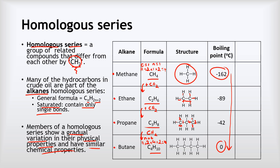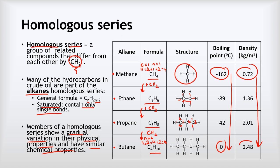There's this gradual increase in boiling point as the molecules get bigger. Similarly with their density — you don't need to memorise the numbers, but the general trend is important. Methane starts off with a very low density of 0.72 kilograms per metre cubed, and it gradually increases up to butane at 2.48 kilograms per metre cubed. Still a low density, but you can see there's that gradual increase in that physical property.